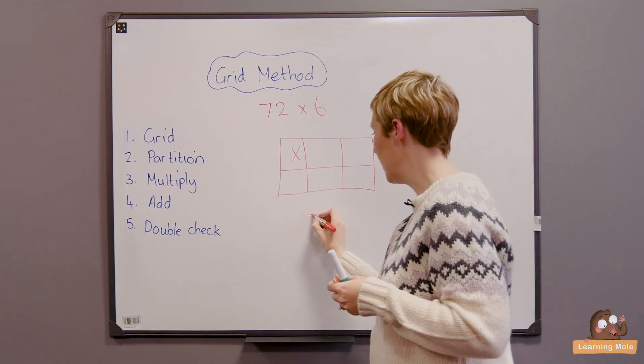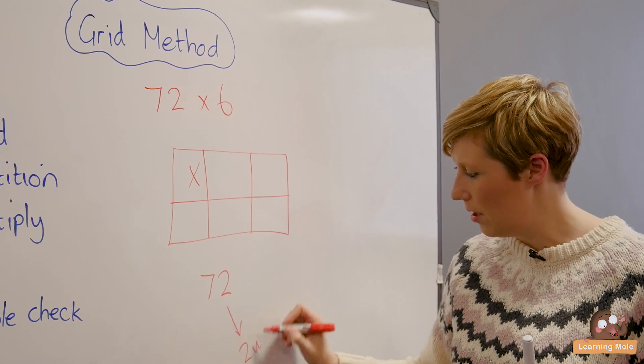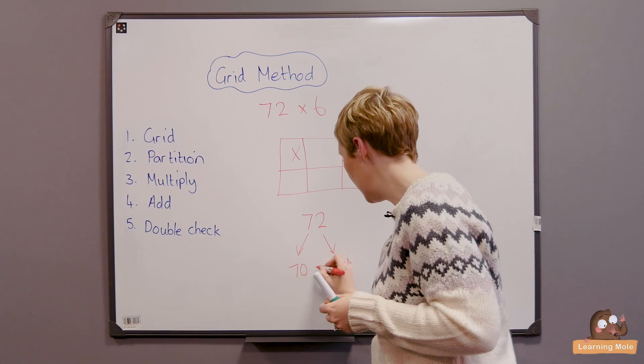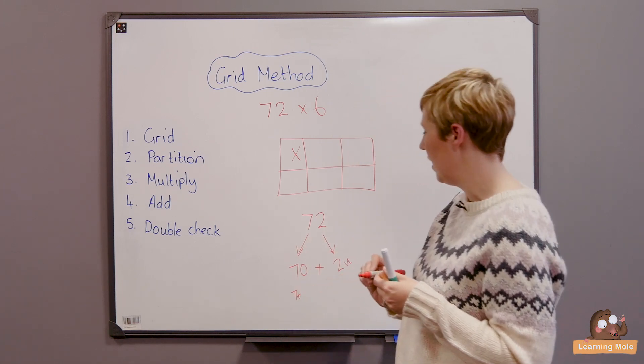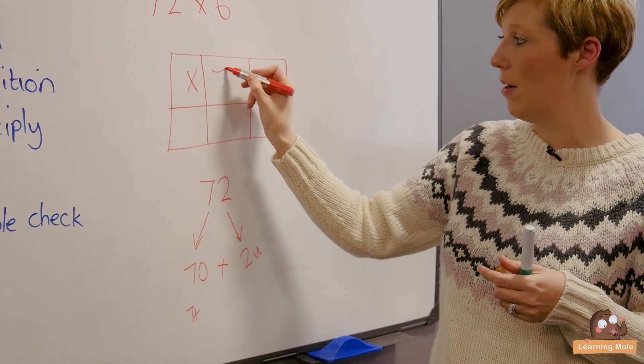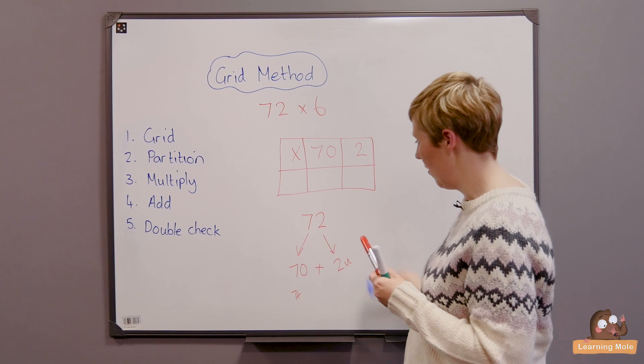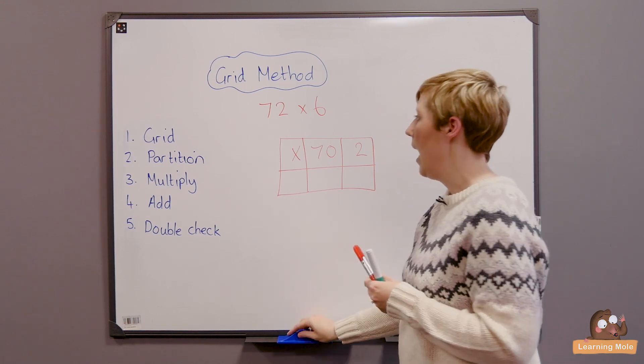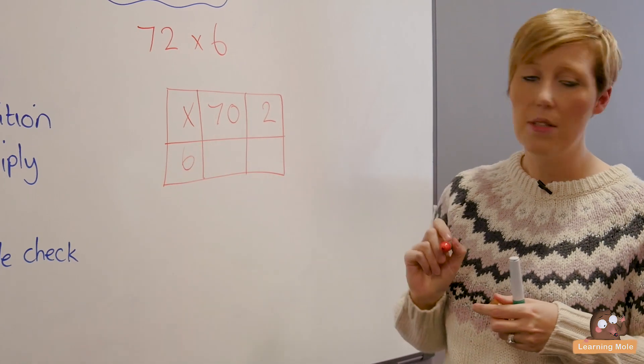Partition, so I've got my 72, I'm going to partition into 2 units and I'm going to partition into 70, 70 plus 2 which is my 7 tens down here if I want to write that down. I'm going to put that into my grid so my 70 and my 2. I'm now going to put my 6 in to show that that's what I'm multiplying by.